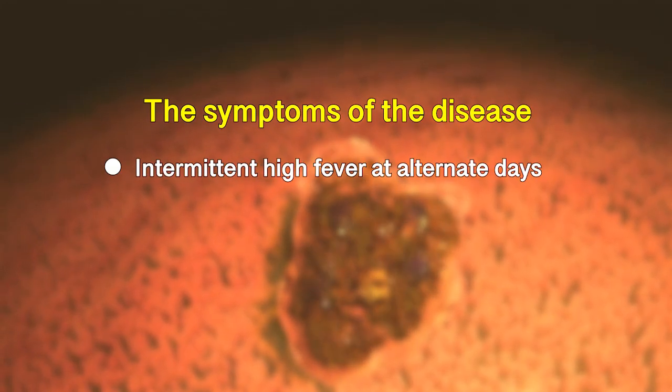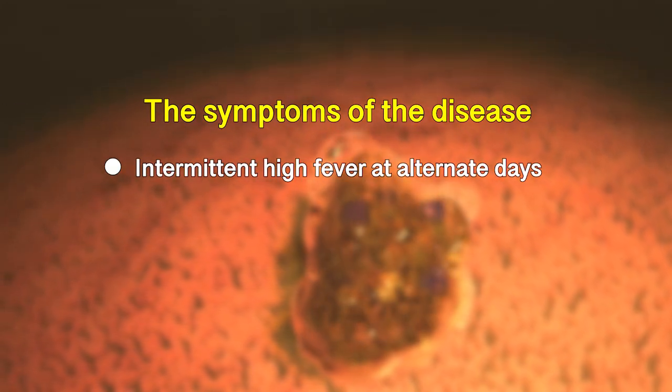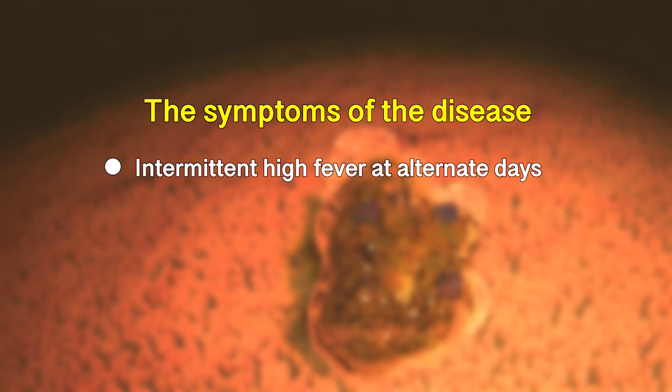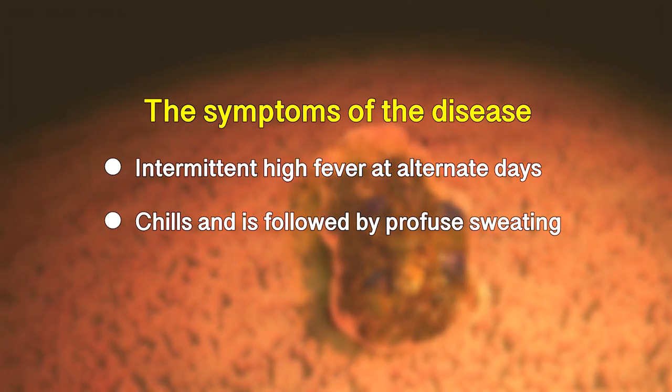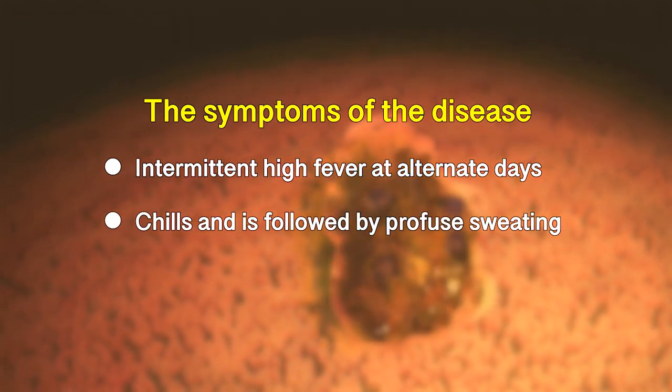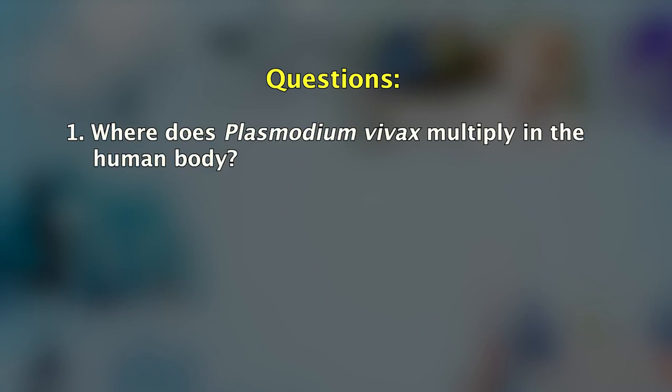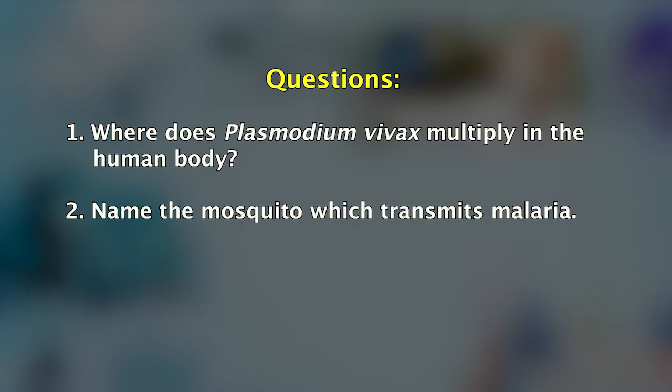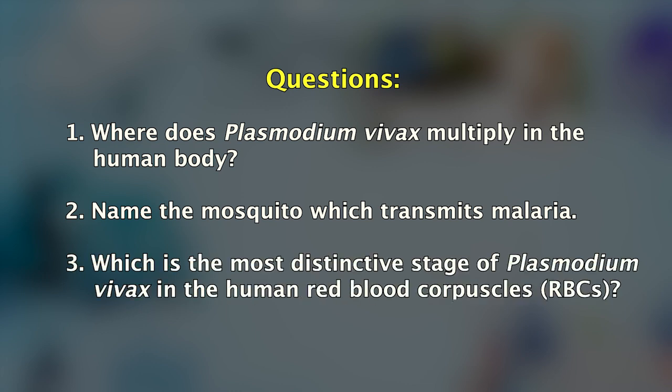The symptoms of the disease are intermittent high fever on alternate days; fever is accompanied by chills and is followed by profuse sweating. Now try to answer these questions: Where does Plasmodium vivax multiply in the human body? Name the mosquito which transmits malaria. Which is the most specific stage of Plasmodium vivax in the human RBC?